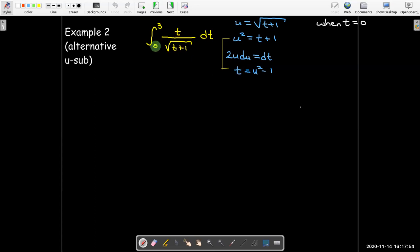Now let's go ahead and do the bounds. When t equals 0, remember u now is going to be radical t plus 1. But radical 0 plus 1 is still just going to be 1. And then upper bound, when t equals 3, u is going to be radical 3 plus 1 means radical 4. So u will equal 2. So again, that came from radical 3 plus 1.